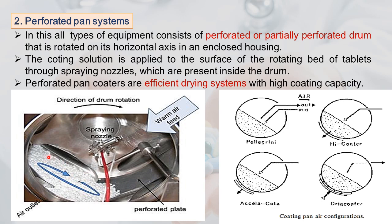In horizontal-axis drums, the movement of the tablet bed is identical — all tablets move in a somewhat elliptical course. In contrast, in the standard coating pan, tablets near the mantle moved elliptically and tablets at the center moved more circularly. In horizontal-axis pans, all tablets have similar elliptical movement.